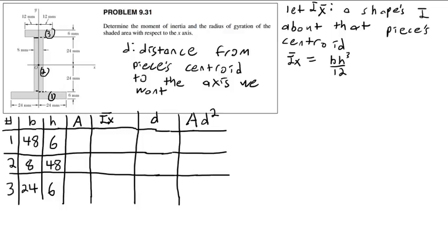Now we do some multiplication. 48 times 6 is 288. 8 times 48 is 384. 24 times 6 is 144. For each of these I'm going to use the formula bh cubed over 12. So 6 cubed times 48 over 12 equals 864. That is the moment of inertia of piece one about its own centroidal axis.